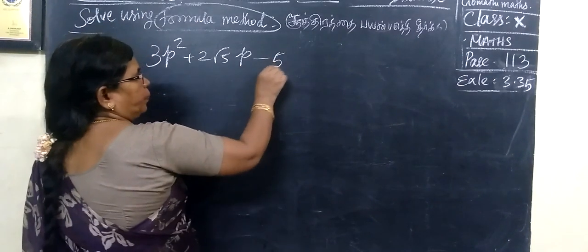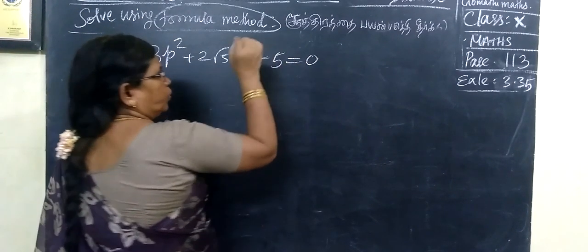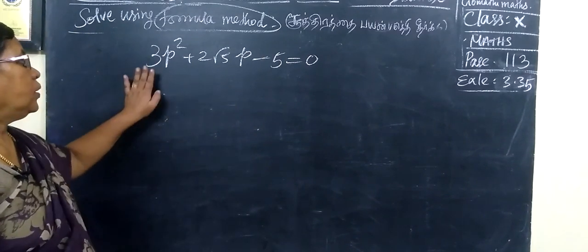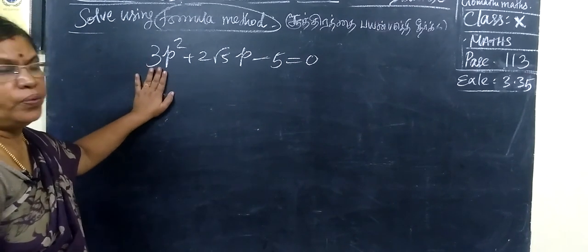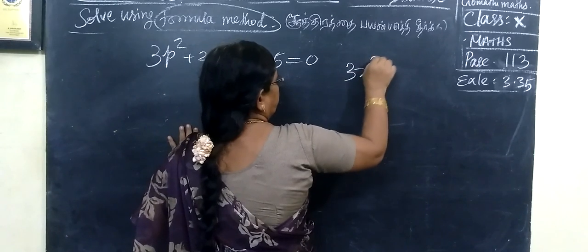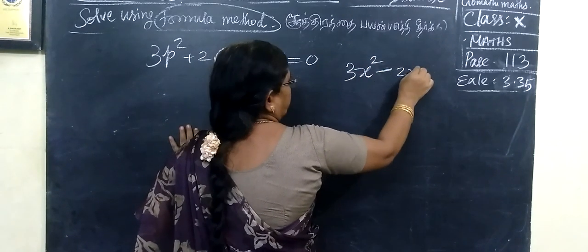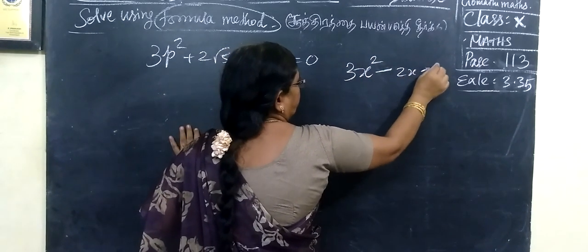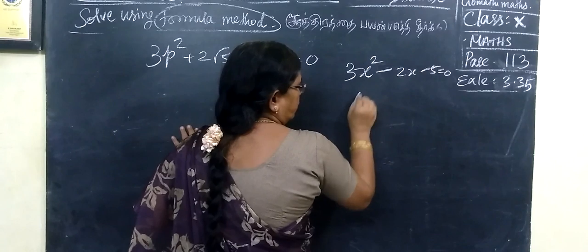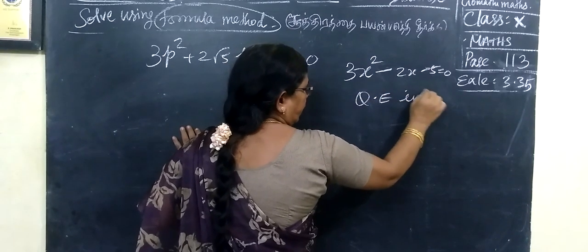Hello, welcome to Gomari Math Channel. So far, this is 3x squared. This is the quadratic equation in x.